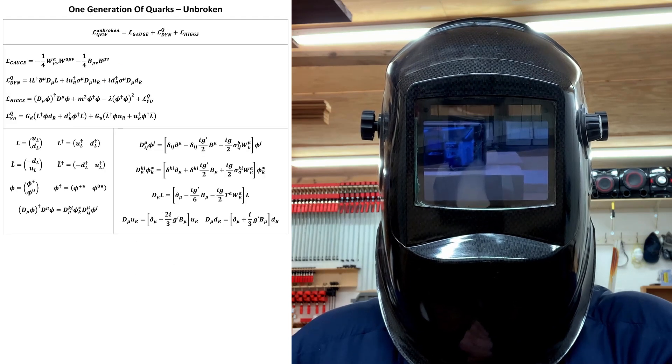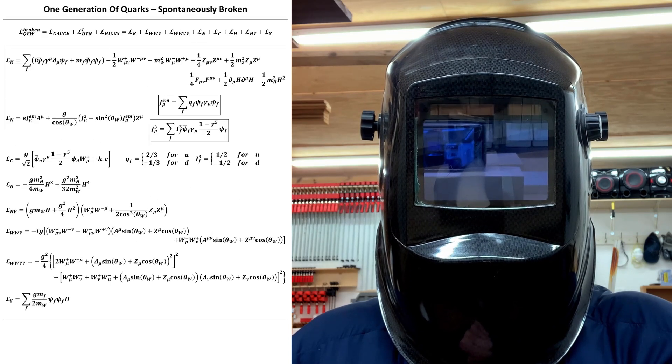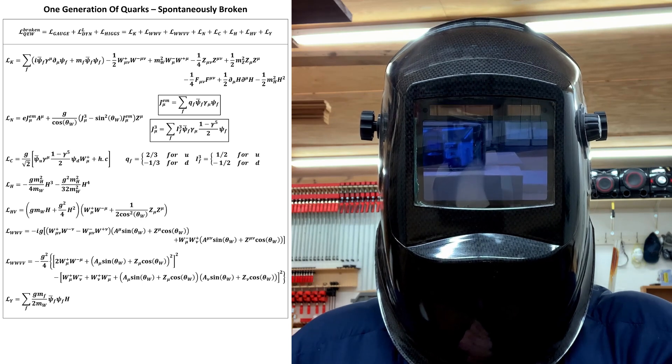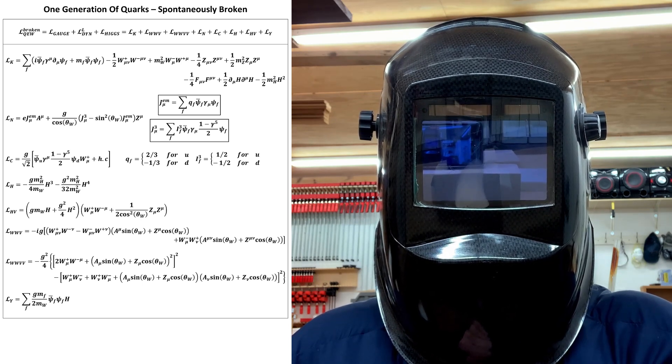Doing so gives us this unbroken Lagrangian and this spontaneously broken one. The next step is to extend this to three generations of quarks.